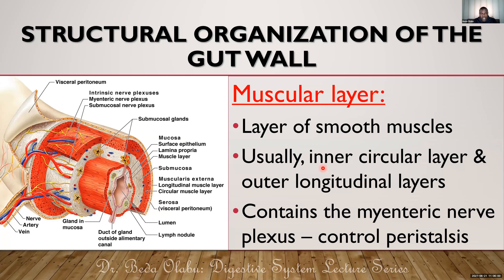The muscular layer of the GIT consists of inner circular and outer longitudinal layers of smooth muscle — that is true. However, there are exceptions to that rule; that statement is only true for some parts of the GIT. I would start with the pharynx, where I'll state two exceptions. The first exception is that the muscles of the pharynx are not smooth muscle — instead they are skeletal muscles.